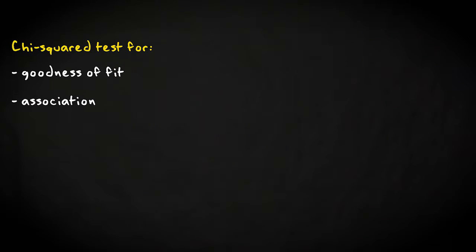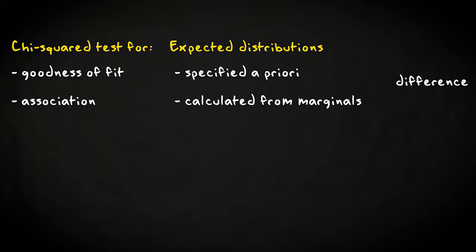As you see, this test is almost identical to the chi-squared test for association. The only difference between the two is that the test for goodness of fit uses an expected distribution that is specified a priori, whereas the test for association derives the expected distribution on the basis of the marginal distributions.